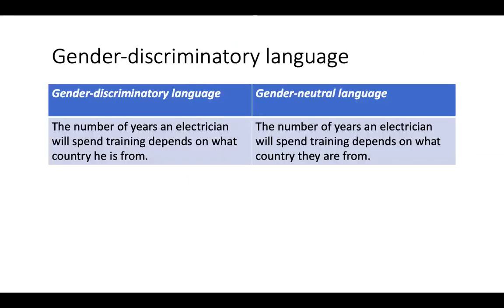Language can also be discriminatory in terms of gender. For example, here in this example on the left side, it says: 'the number of years an electrician will spend training depends on what country he is from.' This is gender discriminatory because it automatically assumes the electrician is male. A gender neutral formulation would be to say 'depends on what country they are from' — using the plural form of 'they' instead of a gendered singular pronoun.